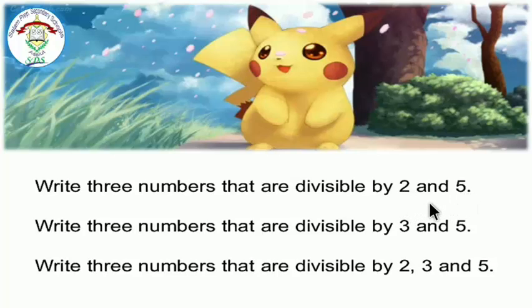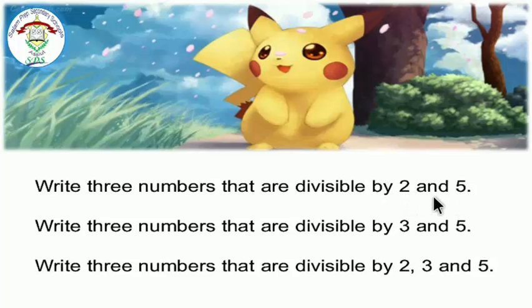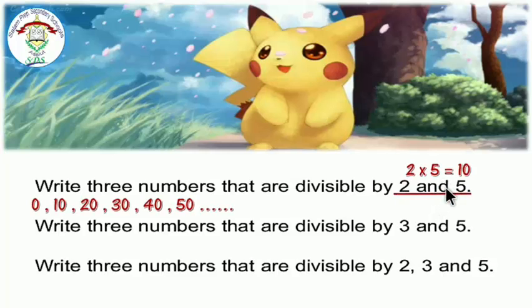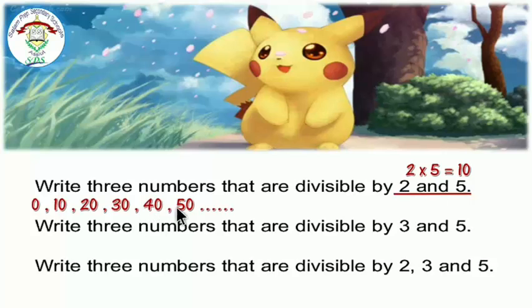We need to find a common number between 2 and 5. To do that, multiply 2 times 5 equals 10. So we need 3 numbers divisible by 10 — in other words, multiples of 10. We can write: 0, 10, 20, 30, 40, 50, and so on.